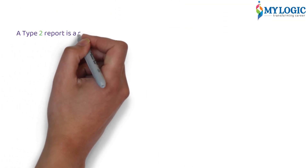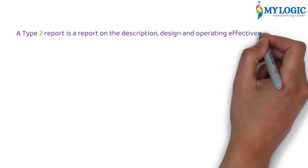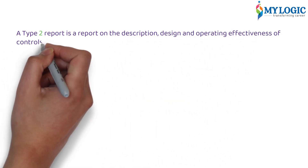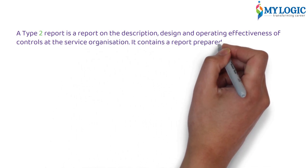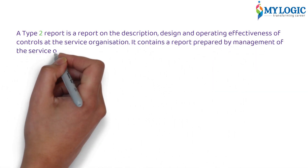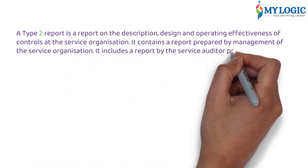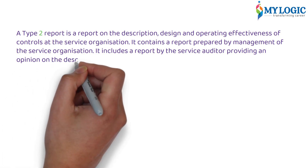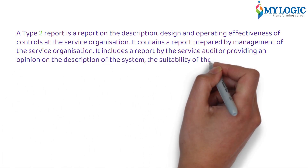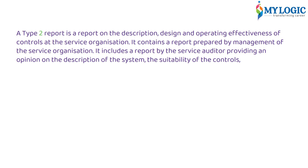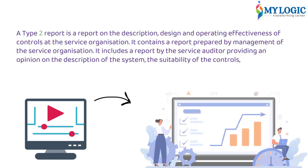A Type 2 report is a report on the description, design and operating effectiveness of controls at the service organization. It contains a report prepared by management of the service organization. It includes a report by the service auditor providing an opinion on the description of the system, the suitability of the controls, the effectiveness of the controls, and a description of the tests of controls performed by the auditor.